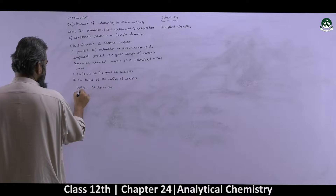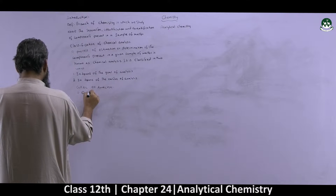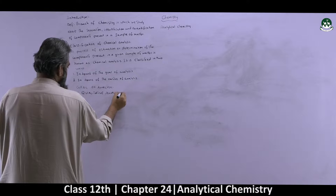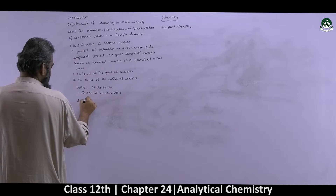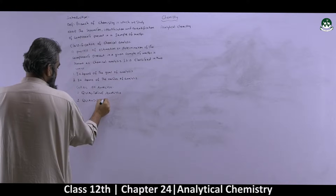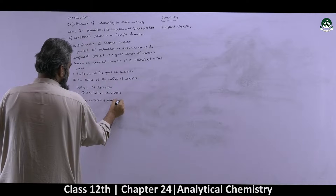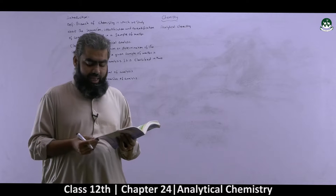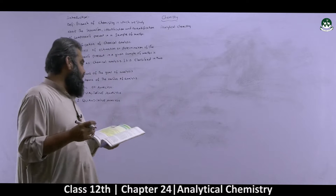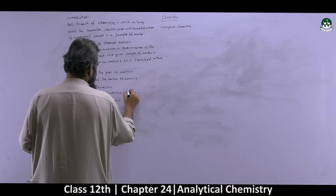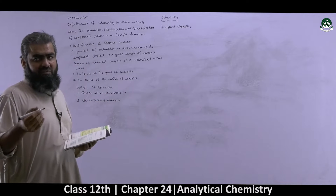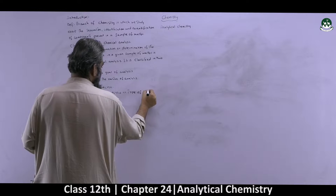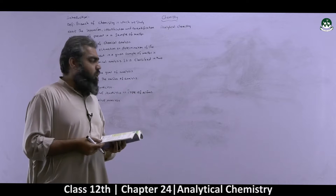Based on the goal of analysis, it is classified into two different types. One we call qualitative analysis, and the other we call quantitative analysis. In qualitative analysis, we look at the constituents present in the sample — basically the type of atoms present in a sample. That is what we call qualitative analysis.